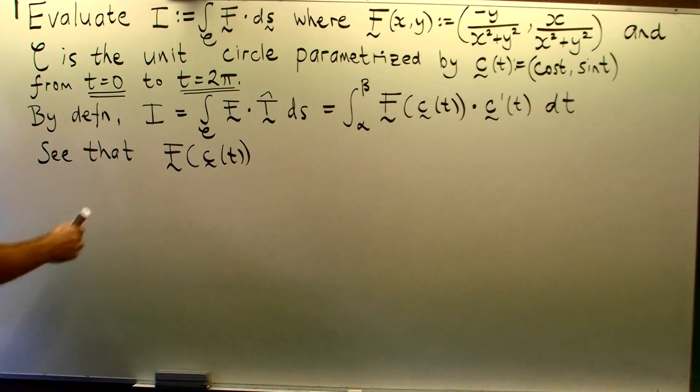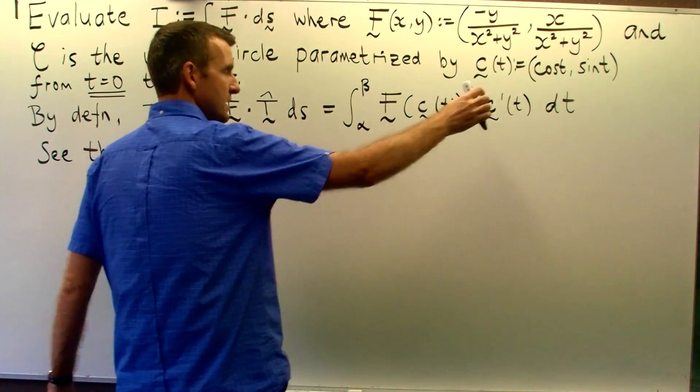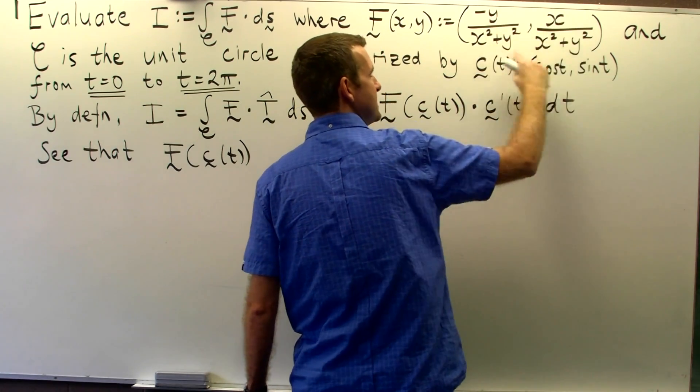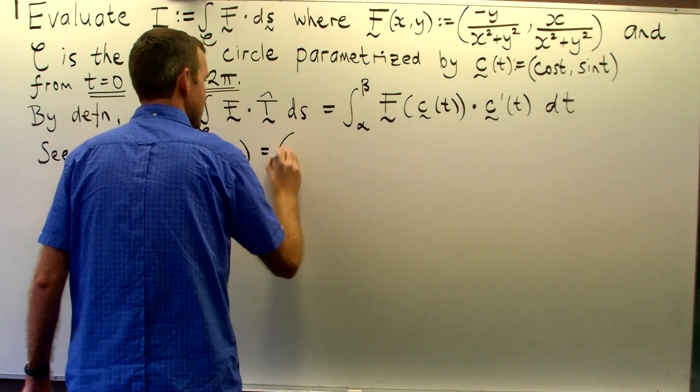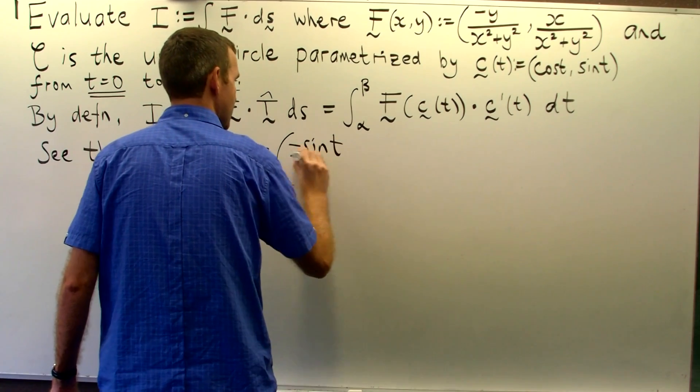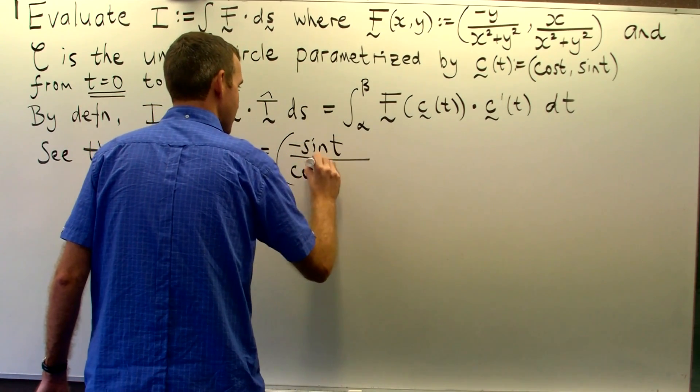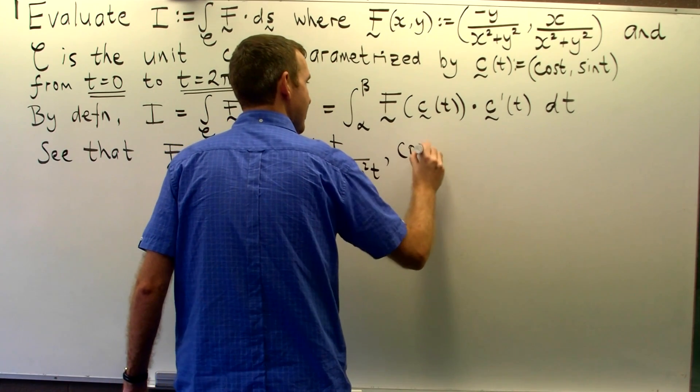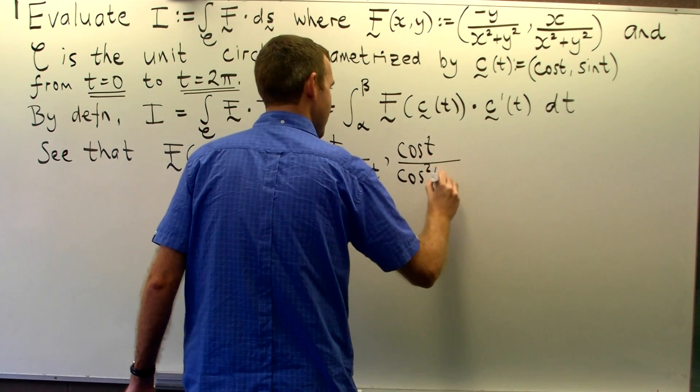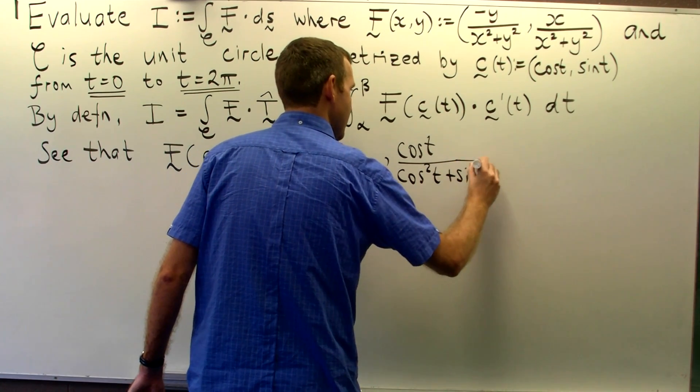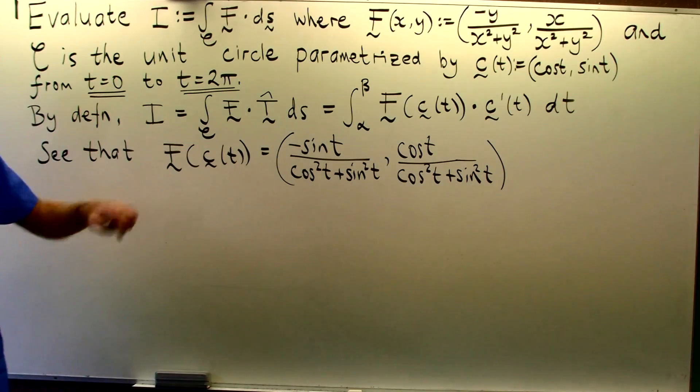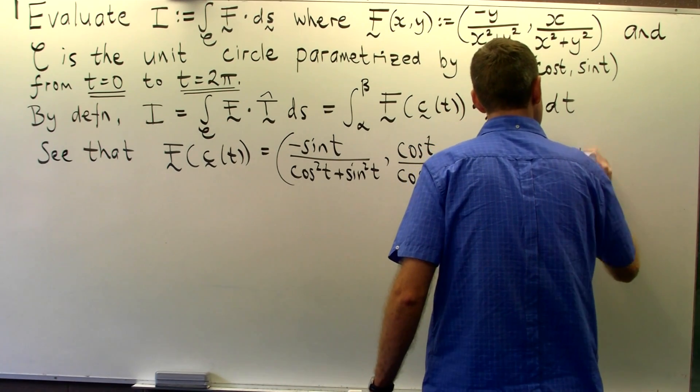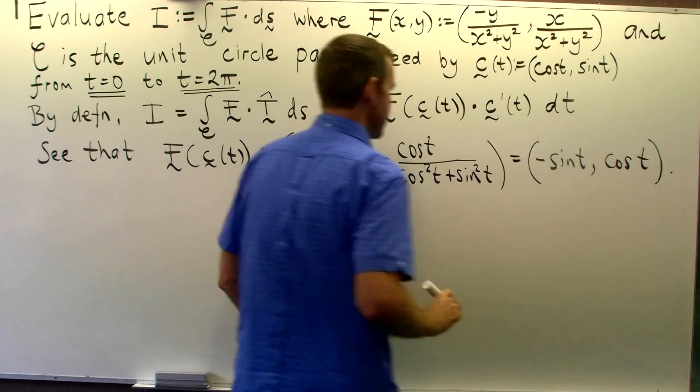So f along c, to get that we just substitute in for x cos t and substitute in for y sin t. We're going to get something a little bit like that. Now notice we can simplify here. So it just reduces down to the following.